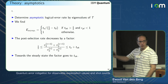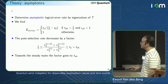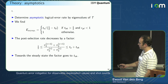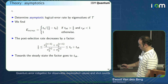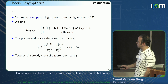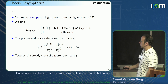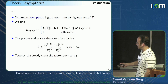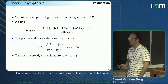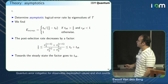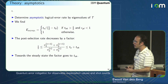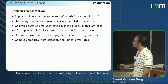Adding more and more checks will only decrease the post-selection rate. At every check it shrinks by a factor of either one-half or T_u + T_d. Towards the steady state, the factor goes as T_u. So if you can apply the Pauli with probability 0.9, it doesn't shrink as fast.